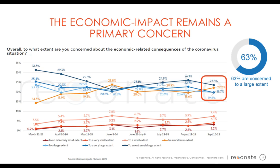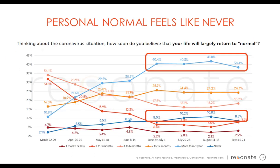When we ask to what extent people are concerned about the economic consequences of the coronavirus, you can see over time how those who were concerned to an 'extremely large extent' started at 31% and dipped down. You can come on the journey with me — around Memorial Day, people started thinking we might have some normalcy, then we saw those pictures and panic as the virus spread. Around June, we hit a bottom where people said they were not that concerned, but then right back up. Our most recent wave is finally showing a leveling off, as people start to come to terms and calm down their expectations a little bit.